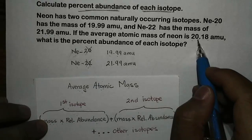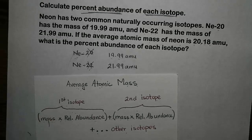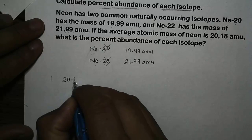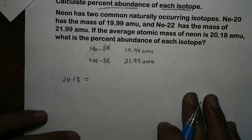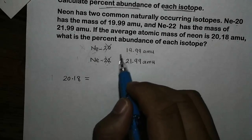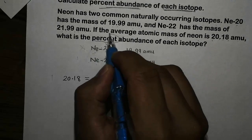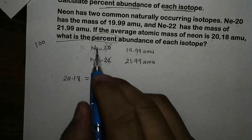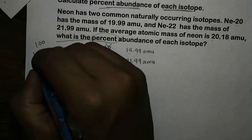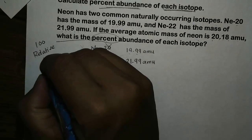So the number 20.18 AMU is calculated using this equation. Let's put everything together as one equation with variables. So 20.18 is your average atomic mass, and this number is based on these two isotopes. Before we apply the information about these two neon isotopes into the equation, we need to understand that percent is equal to 100 always. And if we look at relative abundance instead, it is out of 1.